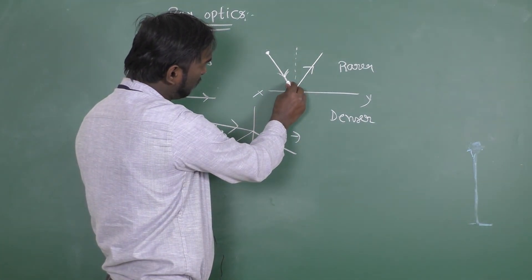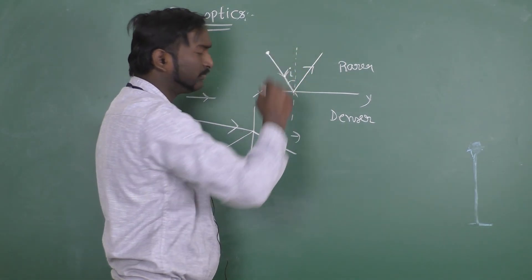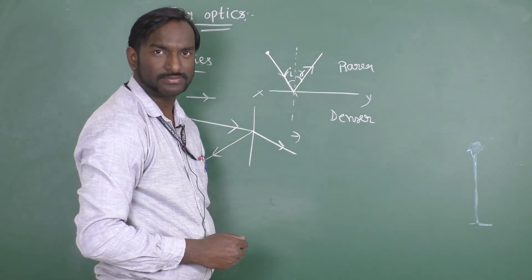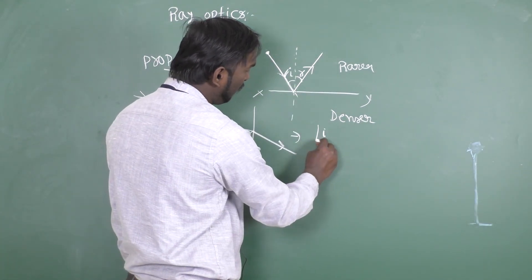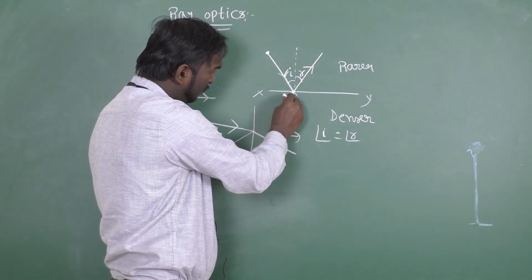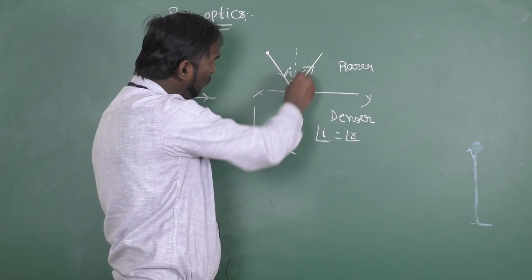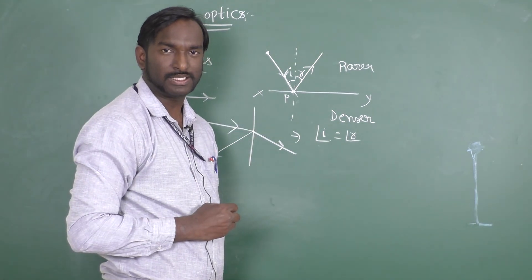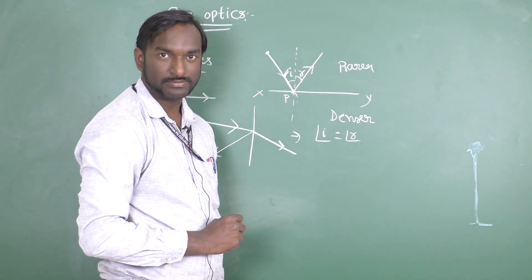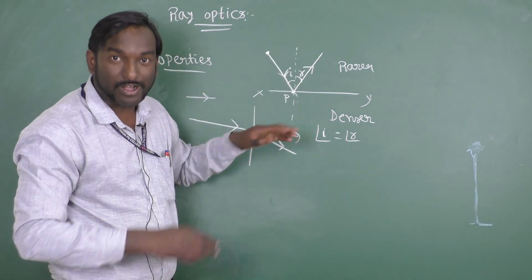The angle of incidence is the angle formed between the incident ray and the normal ray. The angle of reflection is the angle between the reflected ray and the normal ray. The first law: angle of incidence is always equal to angle of reflection. The second law: at the point of incidence, the incident ray, reflected ray, and normal ray all lie in the same plane.